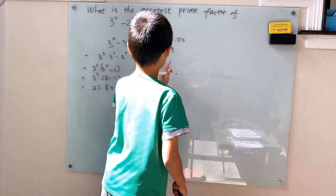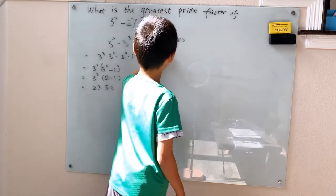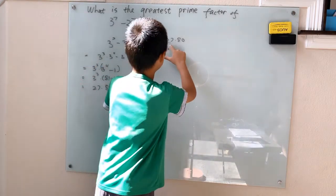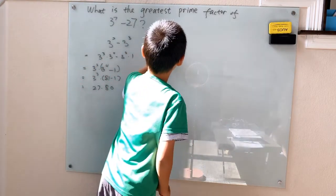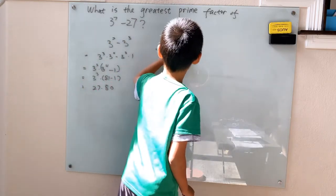Anyway, this is 3 cubed. 27 is 3 cubed. I feel like I've been writing 3 cubed no problem. It comes up a lot. 3 cubed, 3 cubed, 3 cubed. 80 is just 8 times 10.